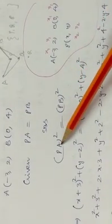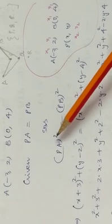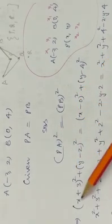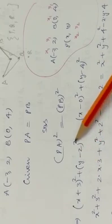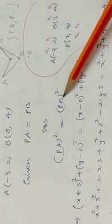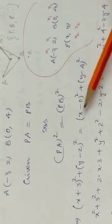A is the first point (x1, y1), P is the second point (x2, y2). Square cancels the root in the formula. Substituting: (x minus 3) whole square plus (y minus 4) whole square equals (x minus 0) whole square plus (y minus negative 4) whole square.